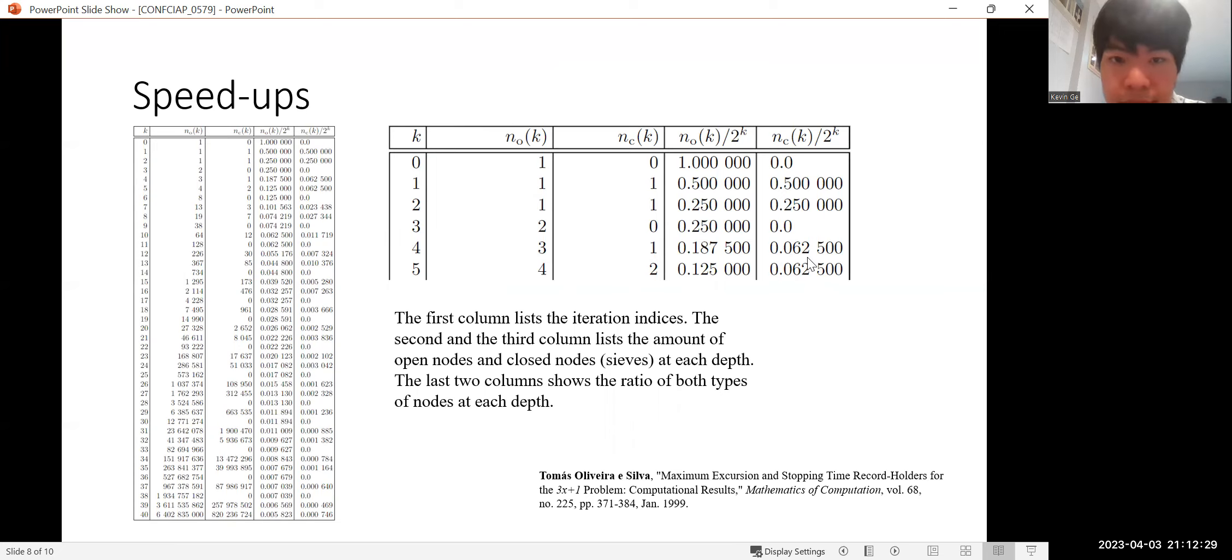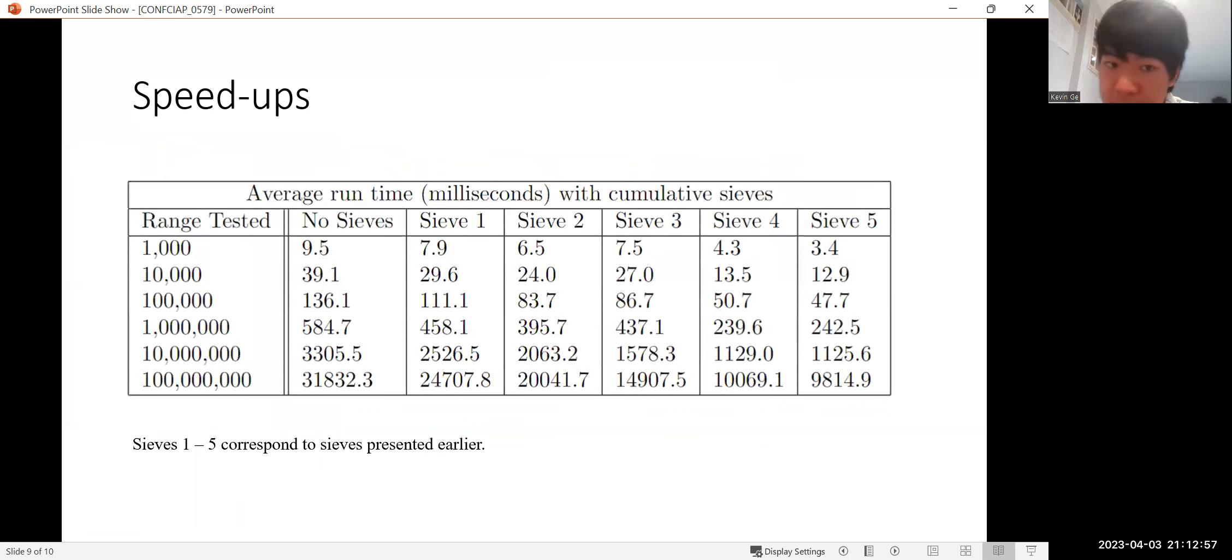What we can notice here is that the speedup of the sieves are not counted individually. In other words, sometimes we're adding one sieve. That's in the case of level one and two. Sometimes we're adding two sieves at a time, such as that in level five. And this investigation can be more accurate if we can test the sieves individually. So this is precisely what we did in this paper.